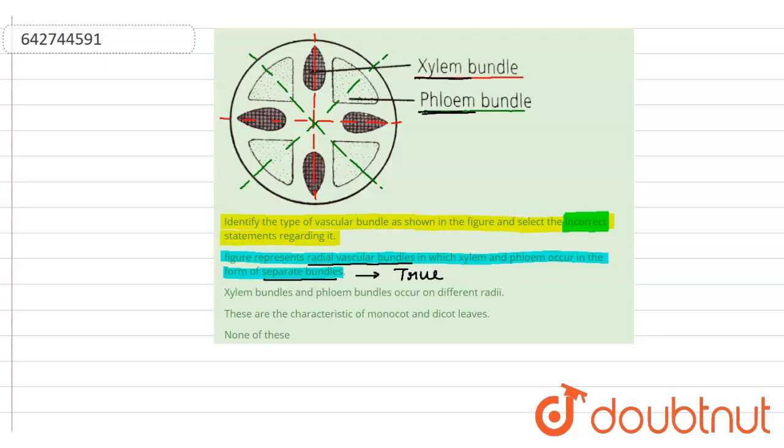The second statement is xylem bundles and phloem bundles occur on different radii. As we have seen, they do exist on different radii, so this is also true. Let's go to the third statement.